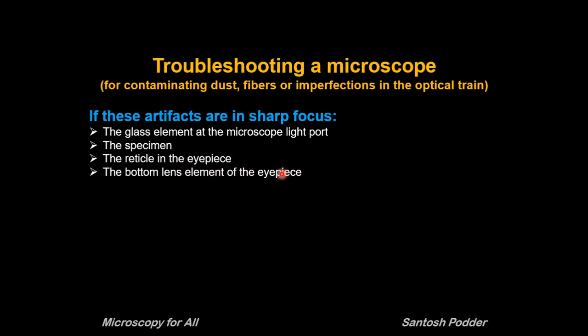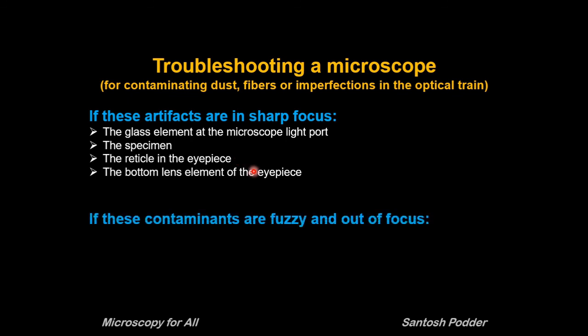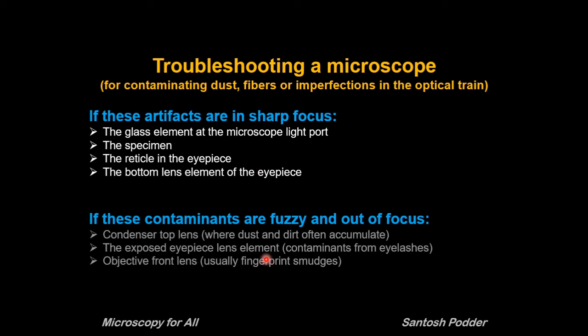You can also check the specimen or the reticule in the eyepiece — the reticule in the eyepiece always remains in the intermediate image plane, so you can easily identify it — and then the bottom lens element of the eyepiece. If the contaminants are fuzzy and out of focus, look near the surfaces that are part of the illumination planes, such as the condenser top lens where dust and dirt often accumulate, the exposed eyepiece lens element which often gets contaminated from eyelashes, and the objective front lens where fingerprint smudges are common.